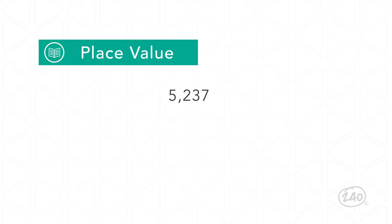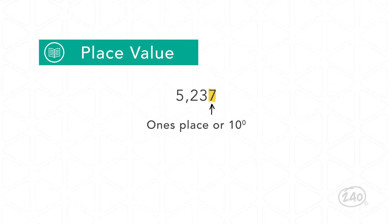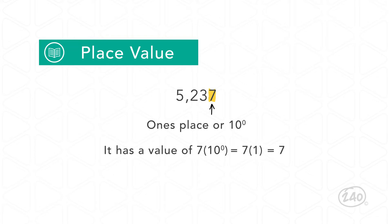For example, the 7 in the number 5,237 is in the ones place, or the 10 to the zeroth place. It has a value of 7 × 10 to the zeroth power, which is equal to 7 × 1, which simplifies to 7.